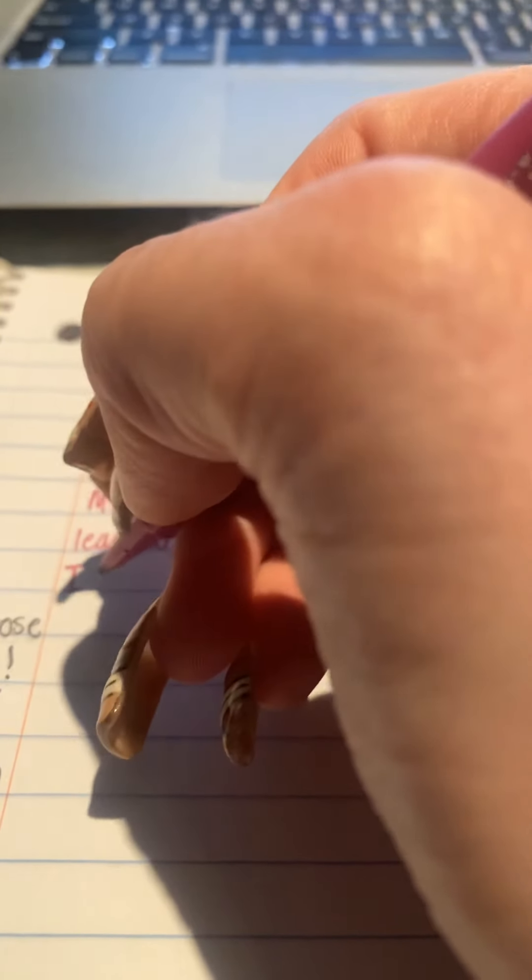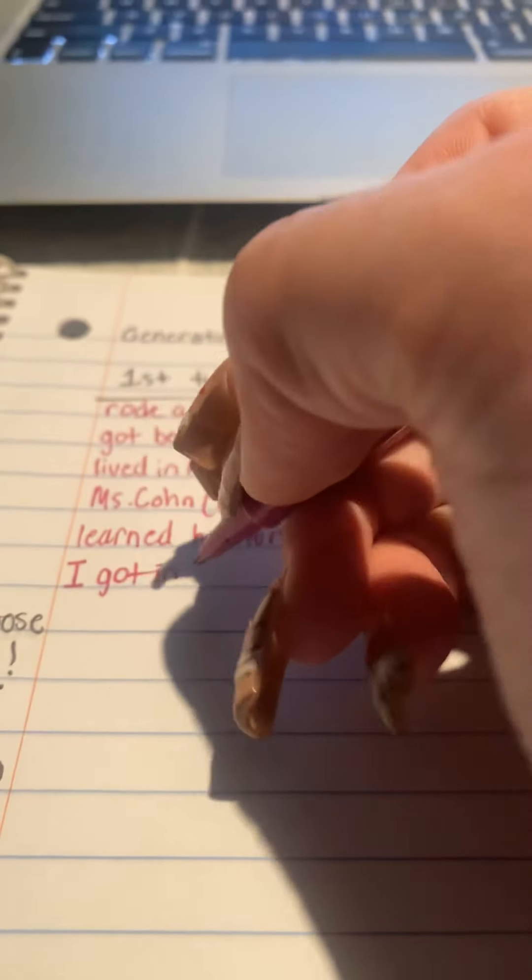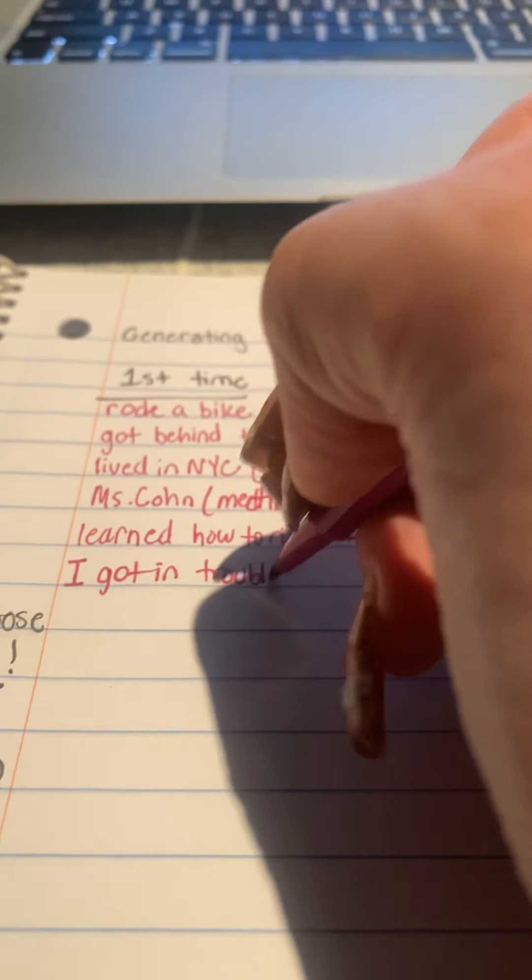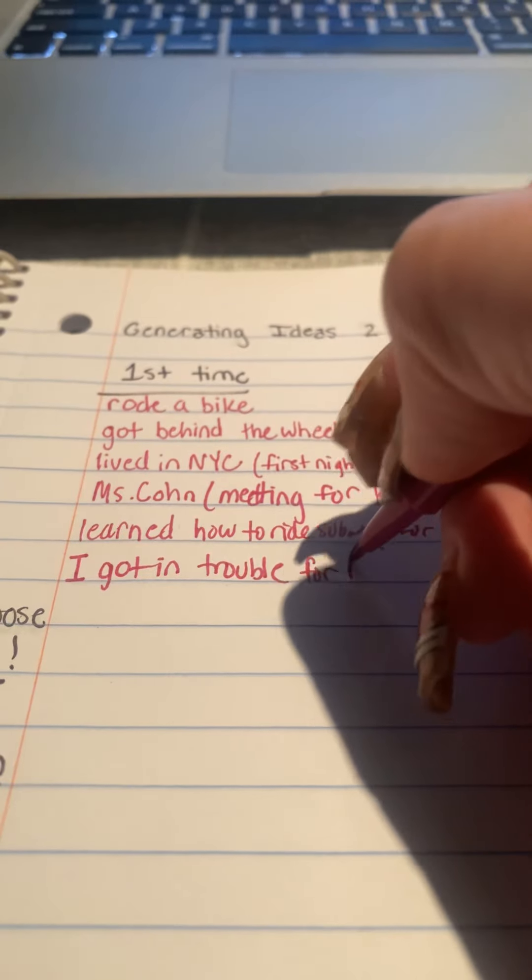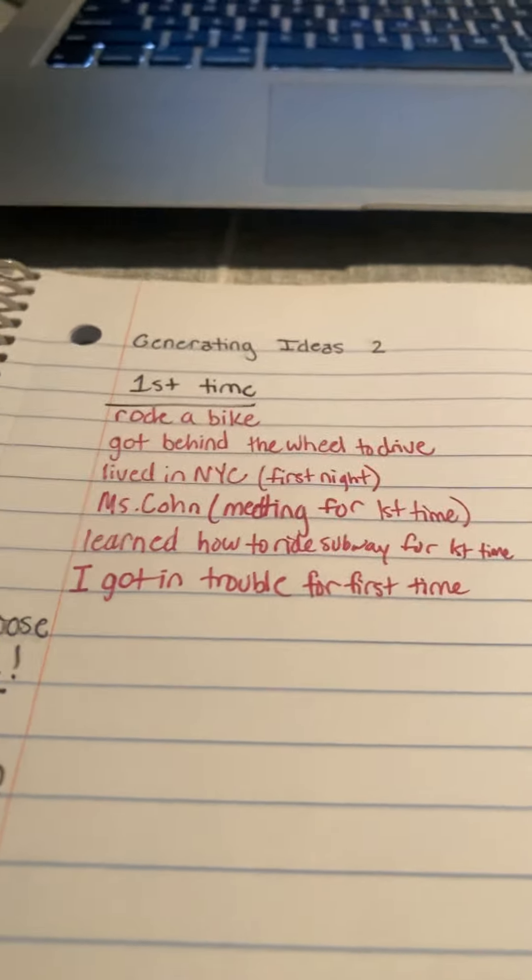And I just had a flashback another time. I did something for the first time was when I remember getting in trouble. I was really little, but it was pretty serious. My room was a mess. I got in trouble for the first time. So those are all the ideas I have for thinking about the first time I did something. And I remember them all pretty well. I could write a story about it.